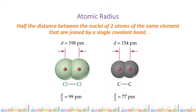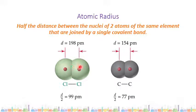The first trend we look at is atomic radius. The atomic radius is half the distance between the nuclei of two atoms of the same element that are joined by a single covalent bond. This may not happen naturally, but this is how the atomic radius is estimated. You take two atoms — let's look at chlorine first — two atoms of the same element and join them together using a single covalent bond. You then measure the distance from the nucleus of one atom to the other; that's going to be your diameter, and we half that to give us the radius value.